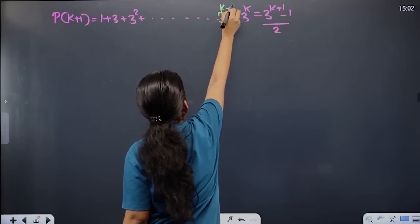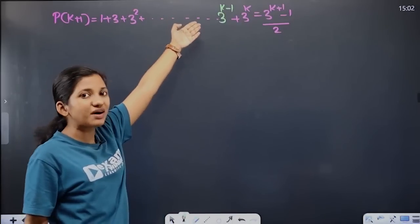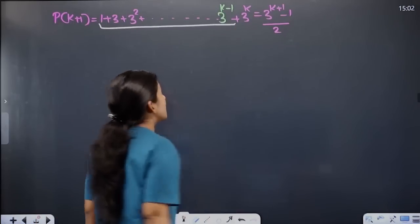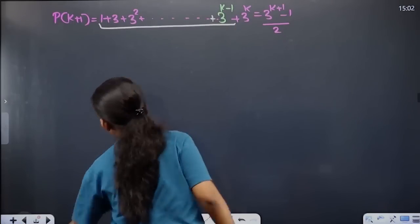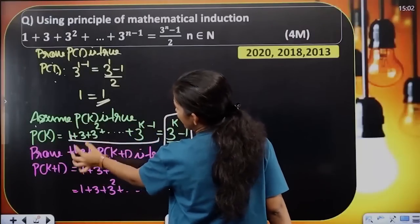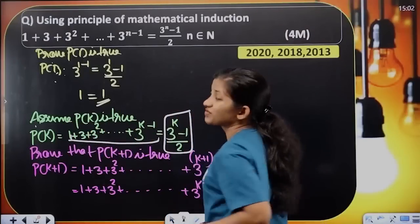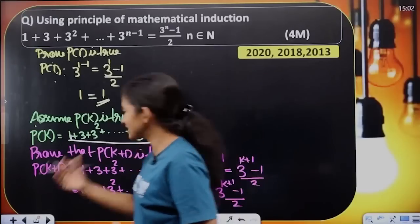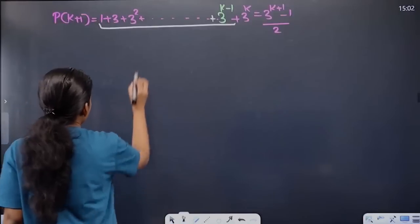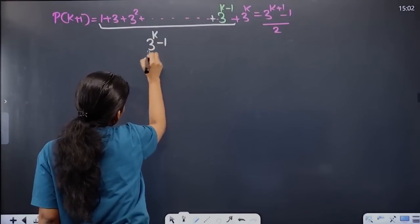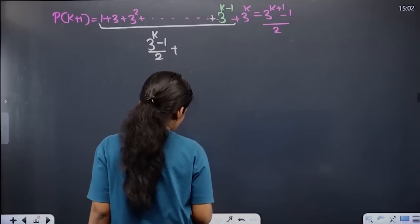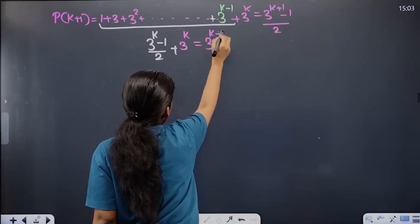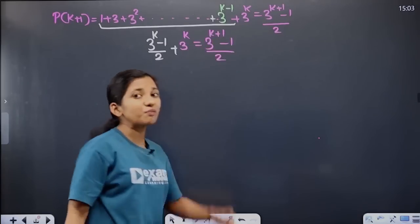Then P of k equals 1 plus 3 plus 3 squared plus etc. plus 3 raised to k minus 1, which equals RHS 3 raised to k minus 1 by 2. Then we substitute: 3 raised to k minus 1 by 2 plus 3 raised to k. So here 3 raised to k equals the right answer: 3 raised to k plus 1 minus 1 by 2. Then we prove P of k plus 1 is true.